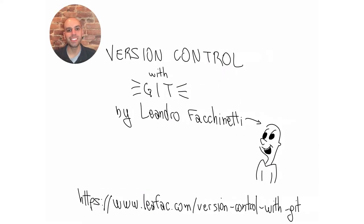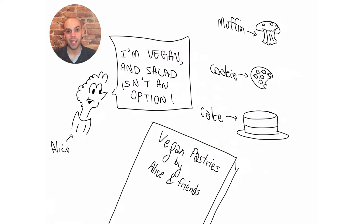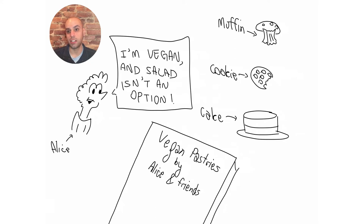Hi, I am Leandro Facchinetti and this is Version Control with Git. Meet Alice. Alice is vegan, but for her, salad isn't an option. She likes muffins and cookies and cake, that sort of thing. And she is writing her own cookbook because she spends a lot of time in the kitchen and her friends do as well, so they are all collaborating on this project.